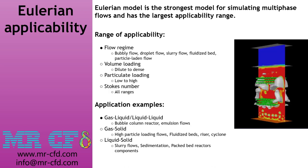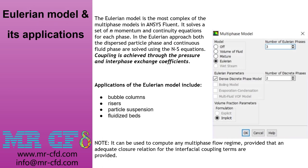The Eulerian model is the strongest model for simulating multi-phase flows and has the largest applicability range. It can simulate various types of flows covering different flow regimes such as bubbly, droplet, slurry, and many other regimes. This model can resolve different volume and particulate loadings and is capable of modeling flows with any Reynolds number. It is the most complex of the multi-phase models in ANSYS Fluent.